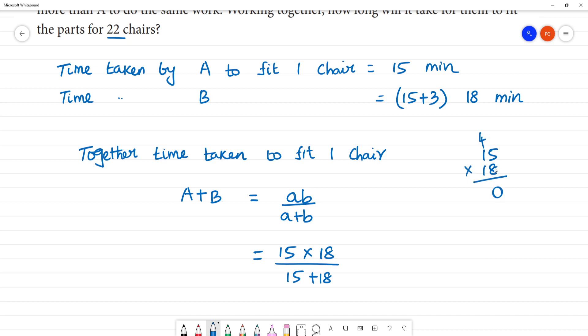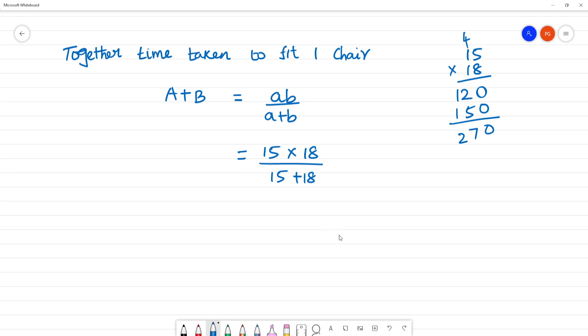15 times 18 equals 270. 270 divided by 15 plus 18, which is 33. 8 plus 5 is 13. This gives us 270 divided by 33, which equals 90 divided by 11.